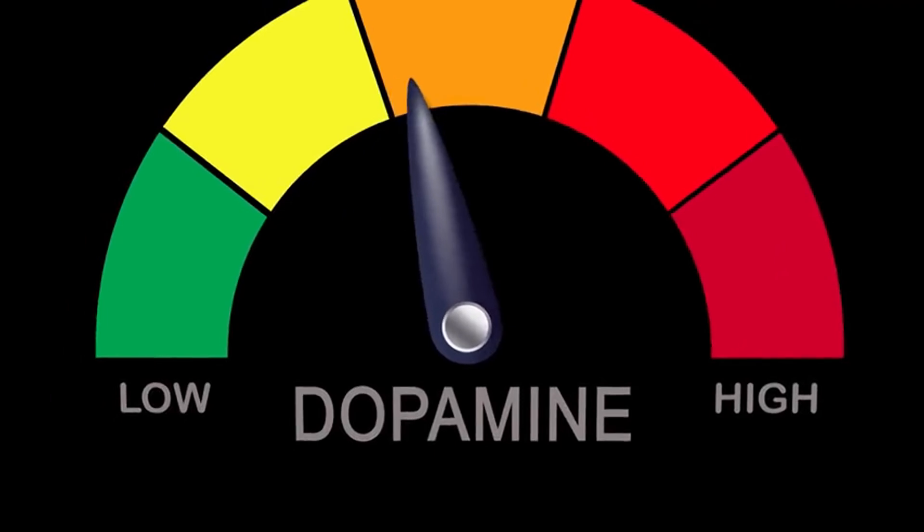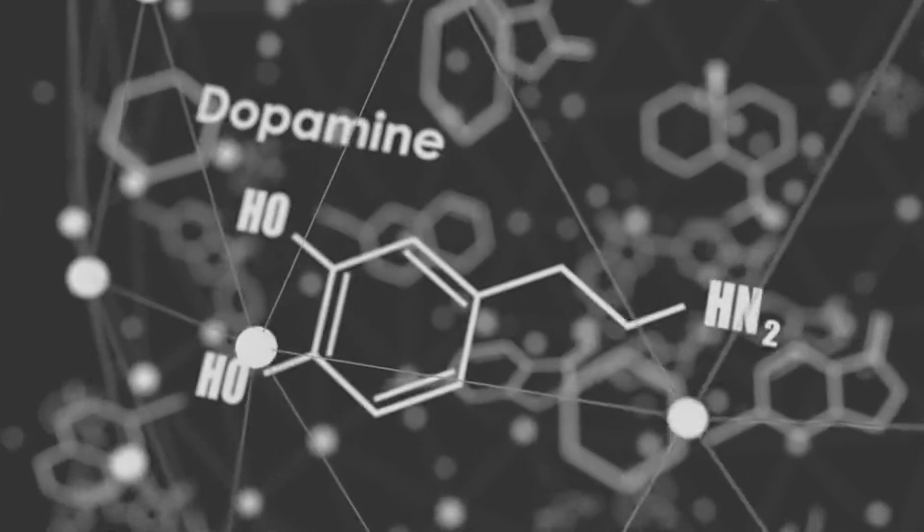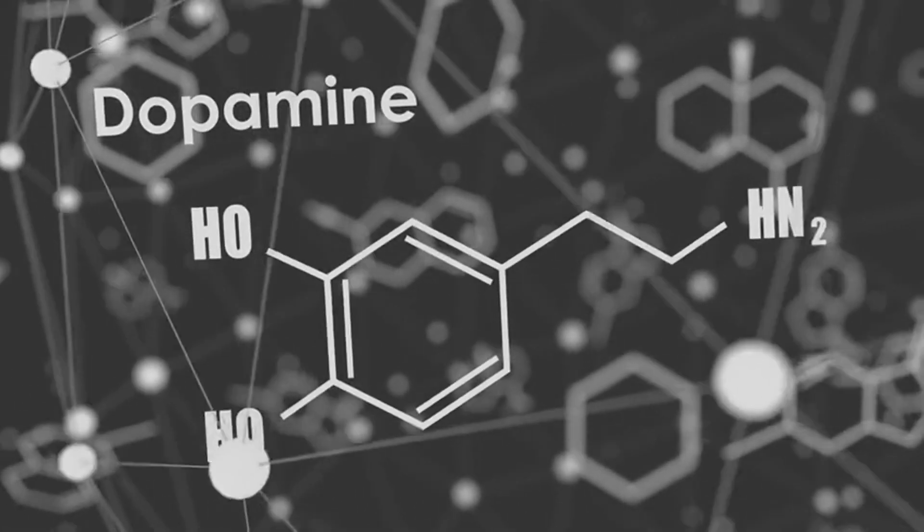For instance, dopamine fluctuations can cause increased sensitivity to pain, while norepinephrine can affect the body's fight-or-flight response, leading to heightened anxiety.